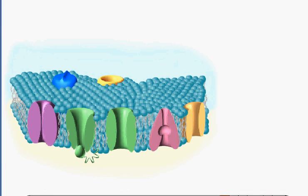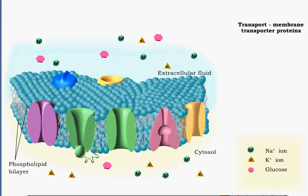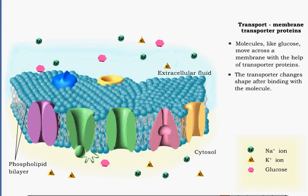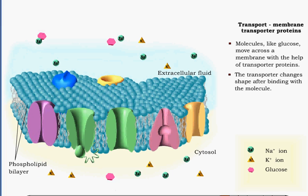Molecules such as nutrients like glucose must bind to a different kind of membrane protein called a transporter. After binding with the molecule, the protein changes shape. This change results in the transport of glucose across the membrane into the cell, where it plays a vital role in metabolic processes like respiration.